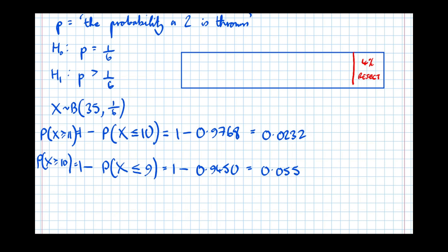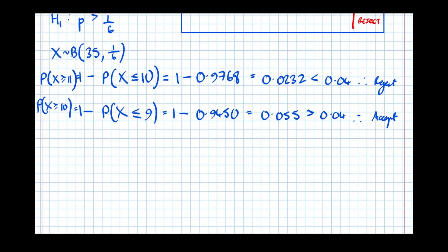So here, this one is less than 0.04, which leads to a reject. This one is greater than 0.04, which is an accept. And it's really important that you show crossing over the threshold from accept to reject or vice versa, from reject to accept.